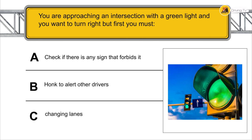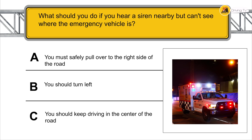You're approaching an intersection with a green light and you want to turn right. But first, you must check if there is any sign that forbids it.